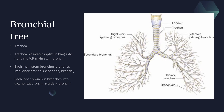The bronchial tree starts with the trachea, which bifurcates at the level of the carina into a right and left main stem bronchus. Each main stem bronchus gives off lobar bronchi (secondary bronchi), and each lobar bronchus branches into segmental bronchi (tertiary bronchi). So: primary bronchus is the main stem, secondary is the lobar bronchus, and tertiary is the segmental bronchi.